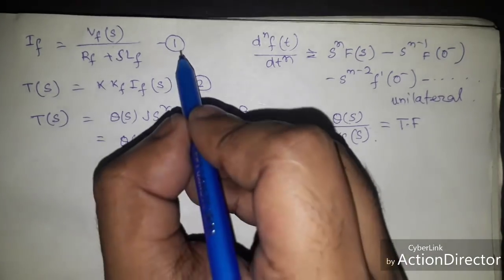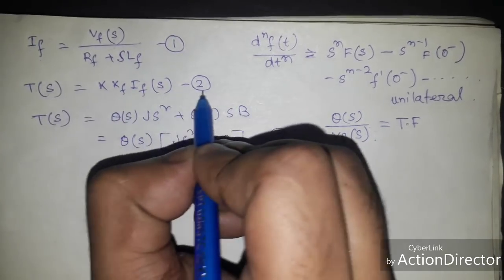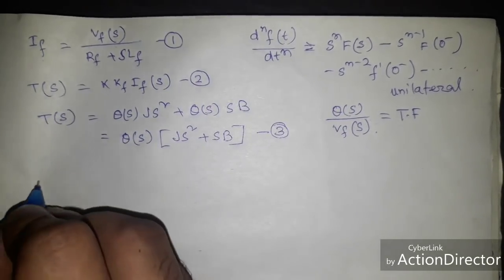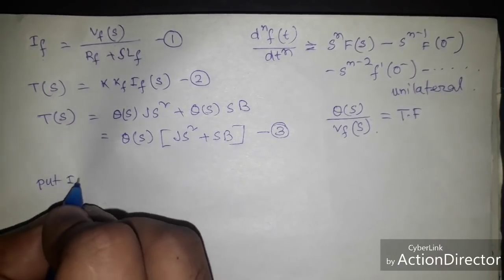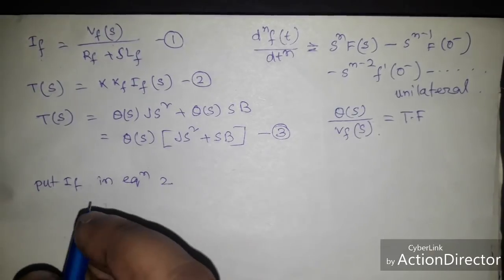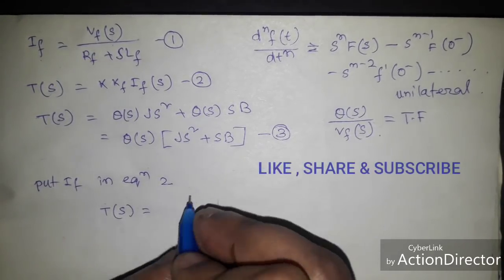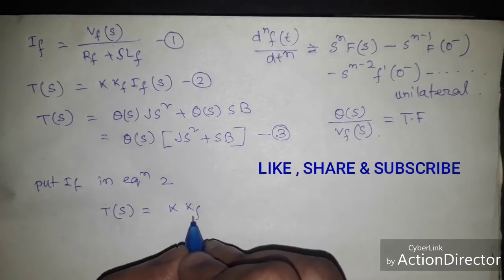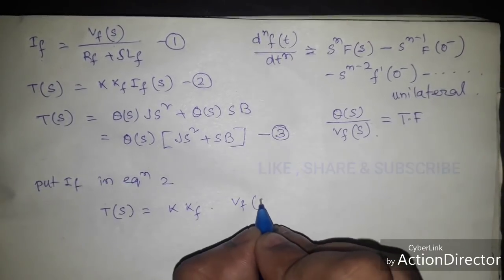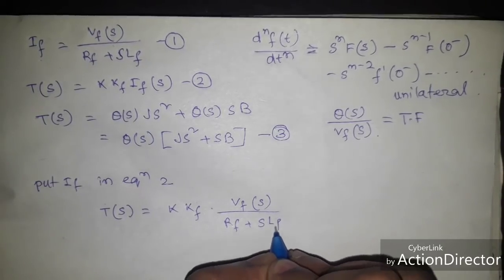Now we put If in equation 2. So put If in equation 2, we get T(s) equal to K Kf into Vf(s) divided by Rf plus s Lf.